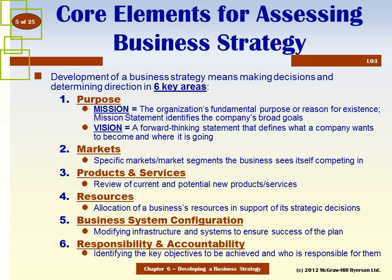We also need a clear strategy around our business systems and organizational structures — for example, how we will distribute our products. Will we have a store presence like Walmart or be an online retailer? Will we manufacture our products or outsource manufacturing and simply redistribute? Finally, we need to define responsibility and accountability — who is responsible for the core elements of the plan, with goals for individuals accountable for achieving those plans.